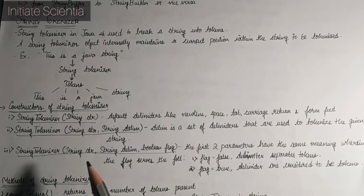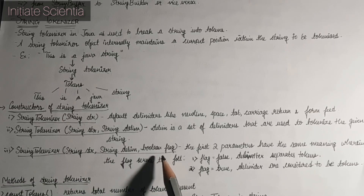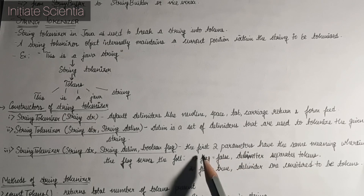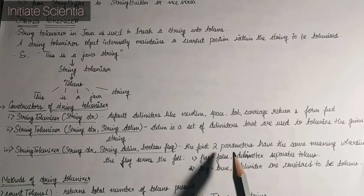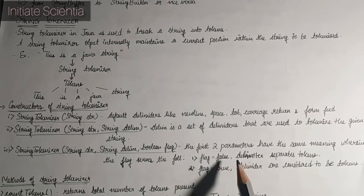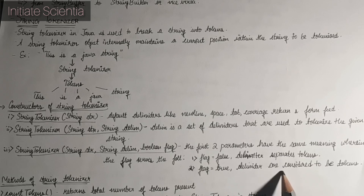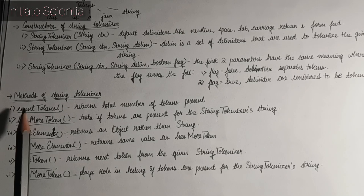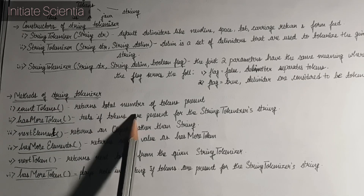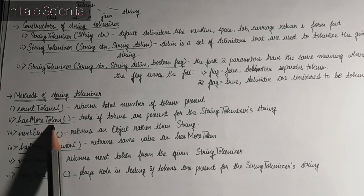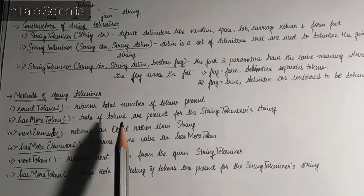Third, StringTokenizer(String str, String delimiter, boolean flag) — the first two parameters have the same meaning. The flag serves the following purpose: if the flag is false, the delimiter separates the tokens. If the flag is true, the delimiters are considered to be tokens themselves.